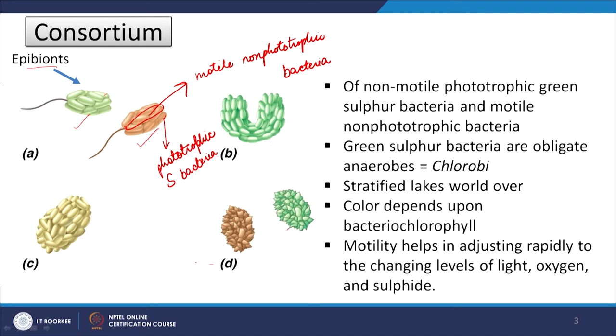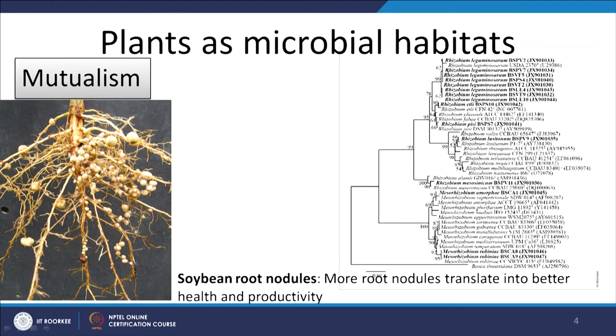These are different examples of consortium. The next example we want to look at is plants as microbial habitat. We have briefly talked about how nitrogen-fixing bacteria allow plants such as soybean and other legumes to fix nitrogen and make protein-rich grains and seeds. This is an example of soybean root nodules. If you pull out the root of legumes and other nitrogen-fixing plants, you will notice these nodule-like structures on them.